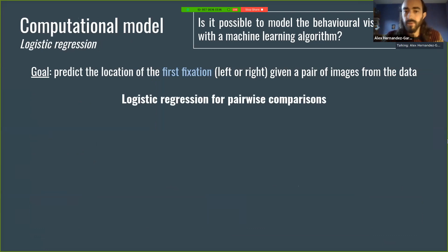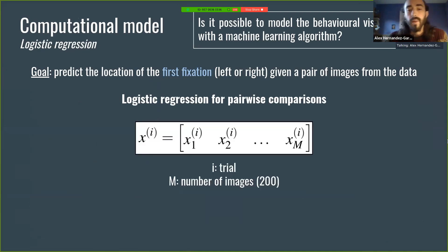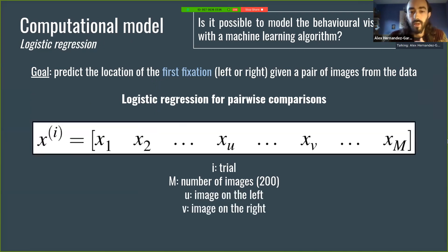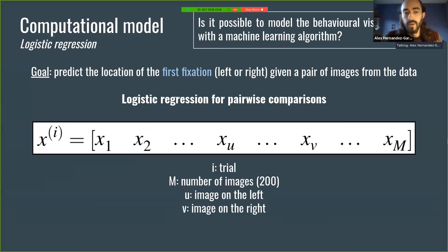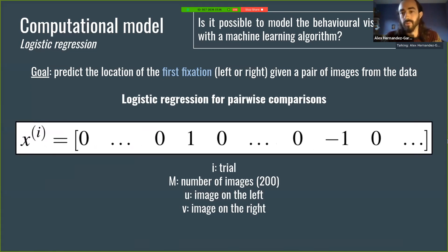We modeled the behavioral data from the participants with a logistic regression model. I don't have time to go into all the details — you can find this in the paper. Essentially, the important bit is that we modeled this with a design matrix where each row corresponds to a trial. We have a vector with 200 entries, one per image, where two elements per row will be the image presented on the left and the image presented on the right. All other elements in the row are zero; the left image is coded as one and the right image as minus one.